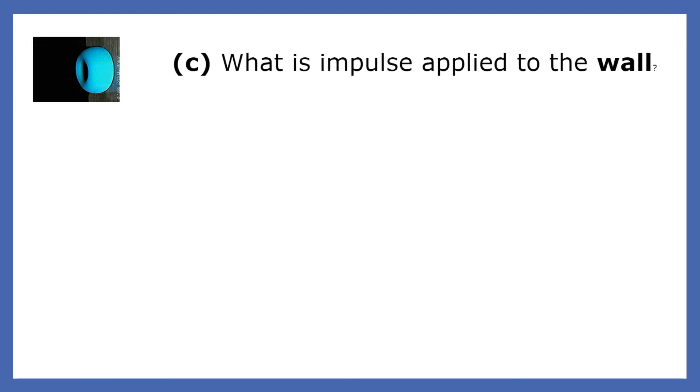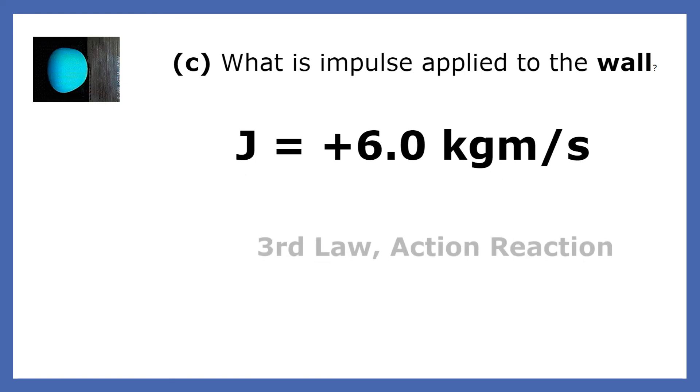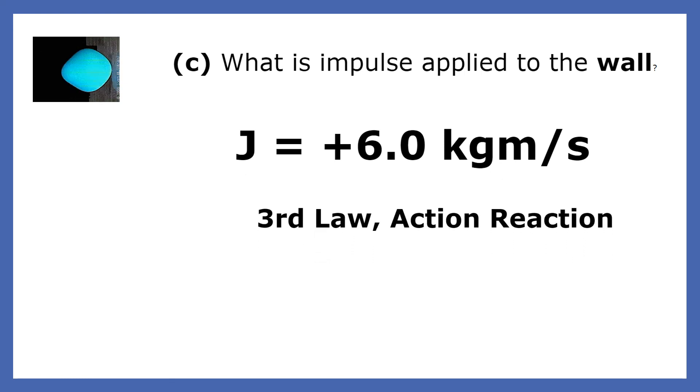In the previous question, we found the impulse on the ball. Now we're asked to find the impulse on the wall. Newton's third law of motion tells us that the impulse on the wall is equal but opposite to the impulse on the ball.